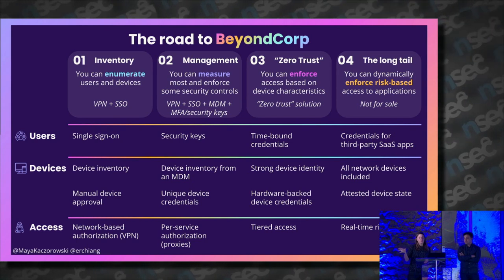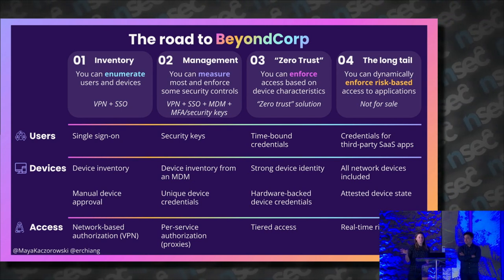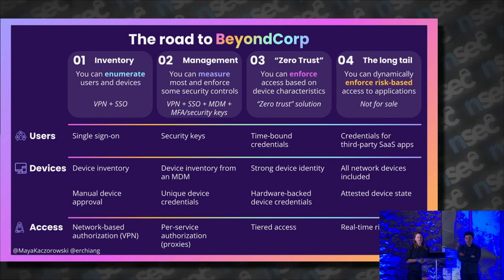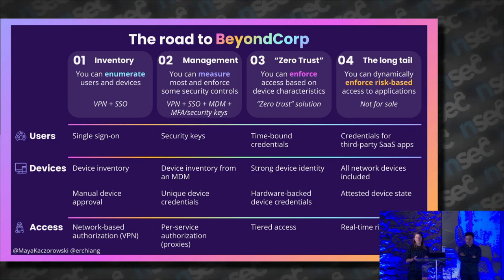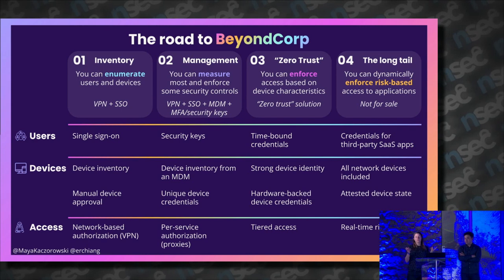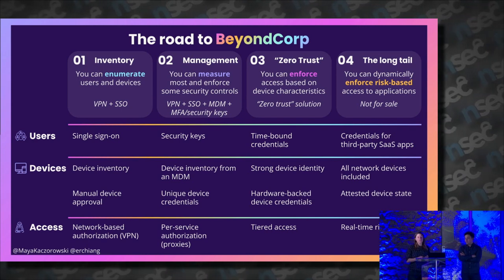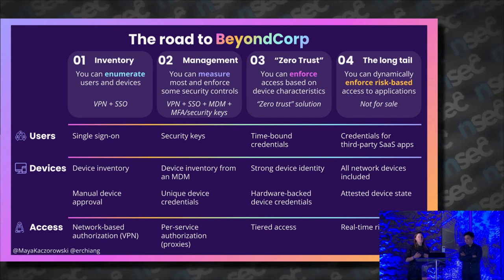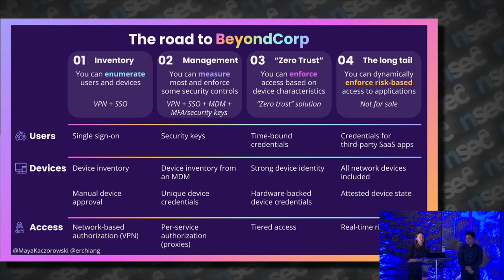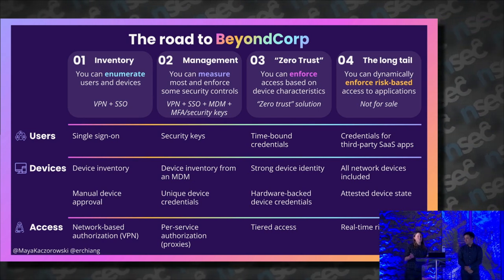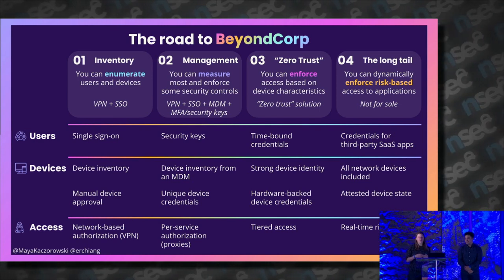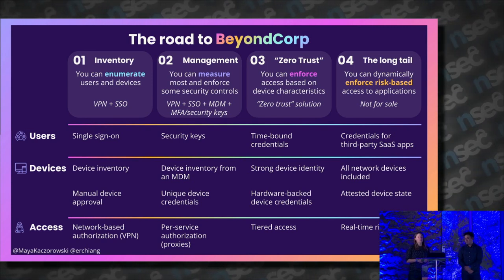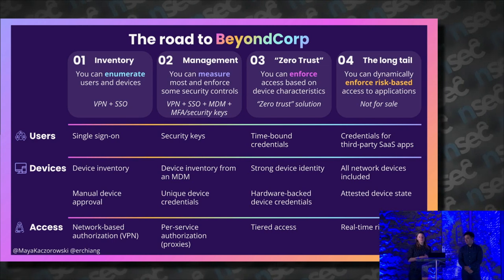Your first step on the road to BeyondCorp is Level 1: having an inventory of your users and devices. At Level 2, you have a way to measure most of your security controls and enforce some of them, and you're able to segment access to specific applications. At Level 3, we have what's typically called zero trust in the market today — tiering users and devices based on measurements and enforcing access based on those measurements. Level 4 is what people think they're being sold: dynamically changing, risk-based access to applications. It's incredibly hard and not really available in the market today, but it's what we should be aspiring to as an industry.